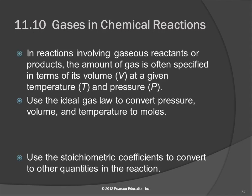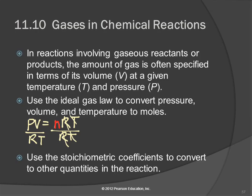So we can use the ideal gas law to convert pressure, volume, and temperature into number of moles. The ideal gas law is PV equals nRT. If we're trying to find number of moles, n, then we just divide both sides by RT — these cancel out — and n equals PV over RT.